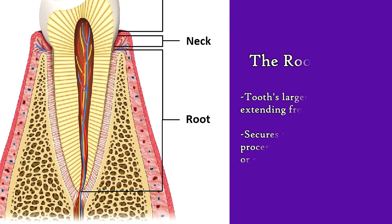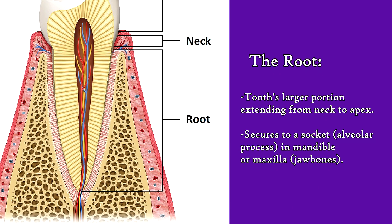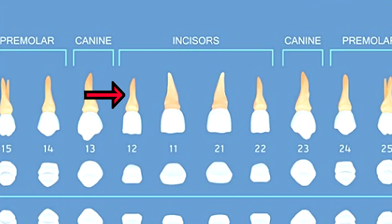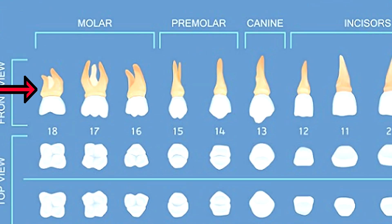Finally, you have the root of the tooth, which is the larger portion extending down from the neck or cemento-enamel junction to the root's apex, and it is secured to a socket of alveolar bone in the mandible or maxilla. Now some teeth, such as the incisors, have just one root, while others, such as the molars, can have two or three roots.